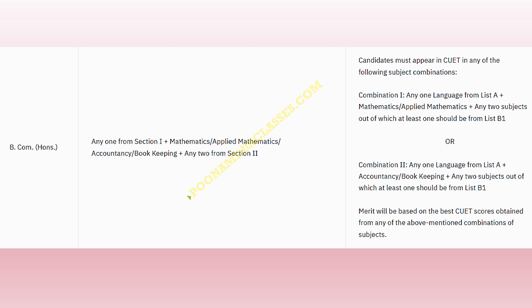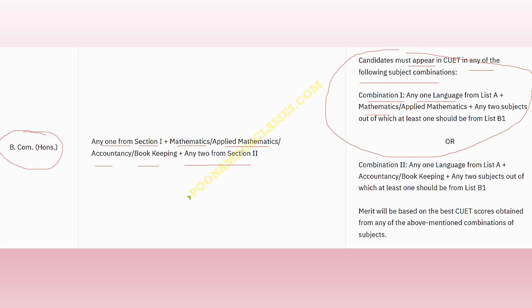Now the main point — if you want to opt for BCom Honors, here is what you need to do. Any one language from Section 1, plus mathematics or applied mathematics or accounting/bookkeeping, plus any two from Section 2. The candidate must appear in CUET with one of the following subject combinations: Combination 1 — any one language from List A, plus mathematics or applied mathematics, plus any two subjects out of which at least one should be from List B1.